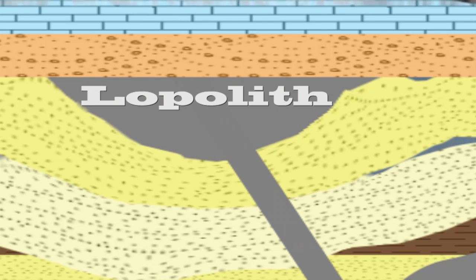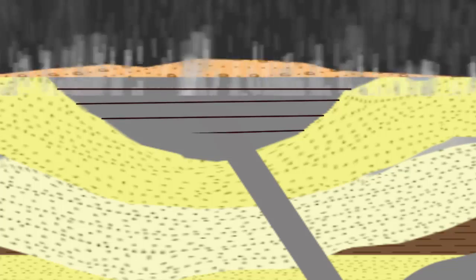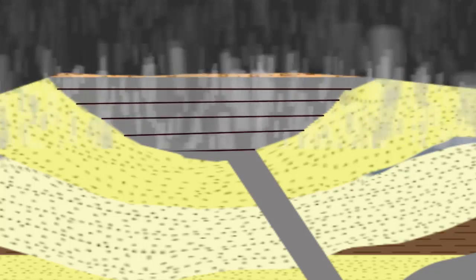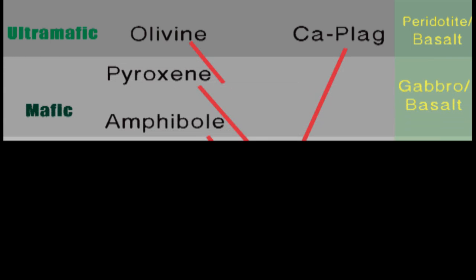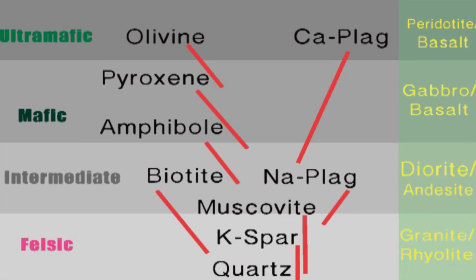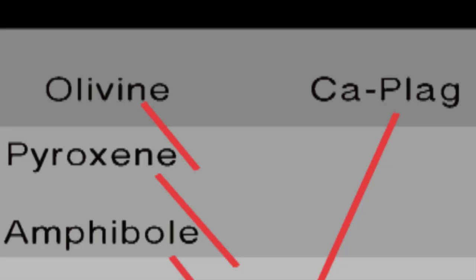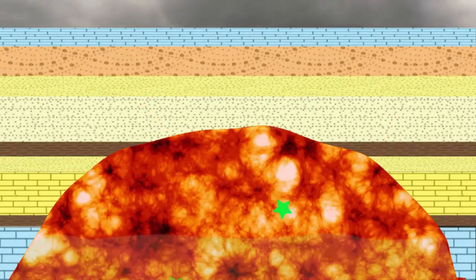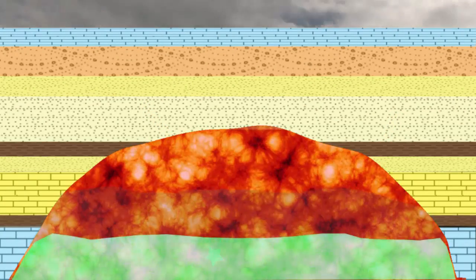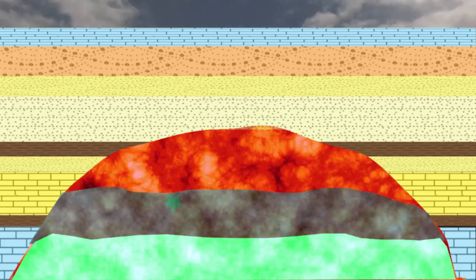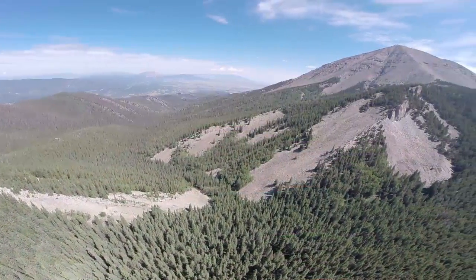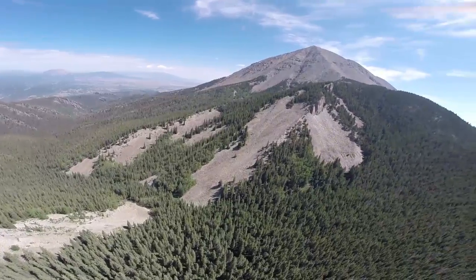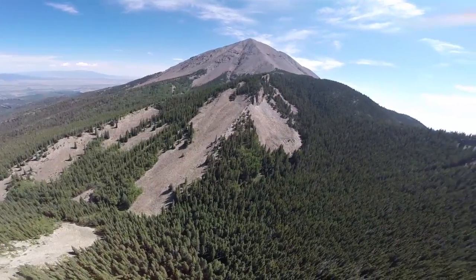Though we often imagine these bodies as large, homogeneous masses, plutons often take on a layered appearance for a couple of reasons. Referring back to Bowen's reaction series, we know that silicate minerals come out of a melt in a specific order, with the ferromagnesian minerals falling out first and sinking to the bottom of the magma chamber, the intermediate minerals falling out on top of these, and the felsic minerals settling out last on the very top. This can give a layered appearance to an exposed pluton.